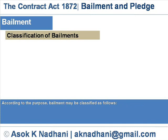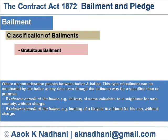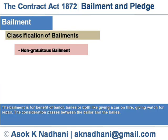Classification of bailments: according to the purpose, bailment may be classified as follows. Gratuitous bailment: when no consideration passes between the bailer and bailee. This type of bailment can be terminated by the bailer at any time, even though the bailment was for a specified time or purpose. Examples include exclusive benefit of bailer — delivery of some valuables to a neighbor for safe custody without charge — and exclusive benefit of the bailee, such as lending of a bicycle to a friend for his use without charge. Non-gratuitous bailment: the bailment is for the benefit of bailer, bailee, or both, like giving a car on hire or giving a watch for repair. The consideration passes between bailer and bailee.